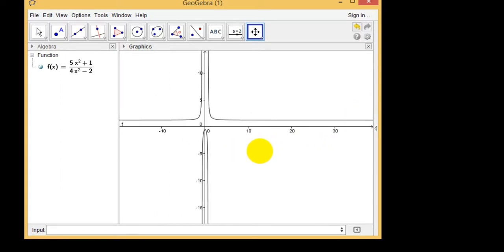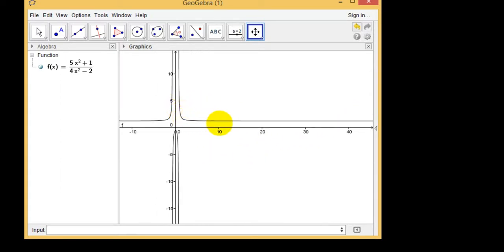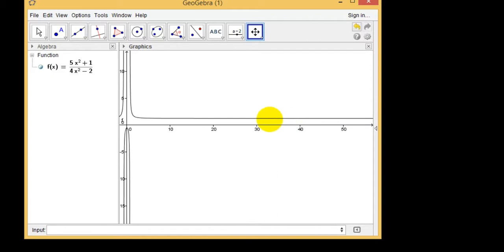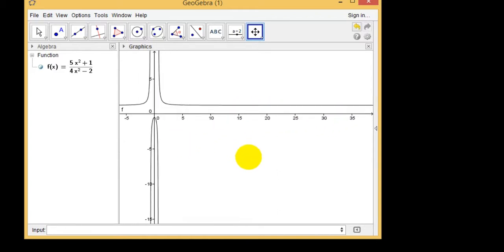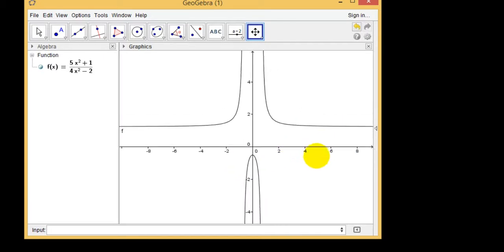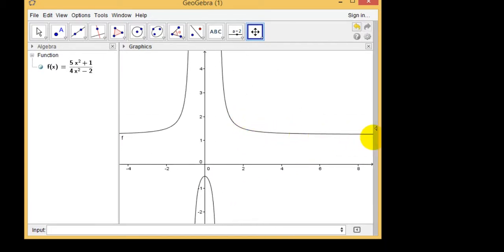And you can see here the line pretty much goes horizontal over here. So whatever the y value is for this line is pretty much the answer. So if I zoom in a little bit on the line, I can see here the line becomes pretty flat at y equals 1.25.